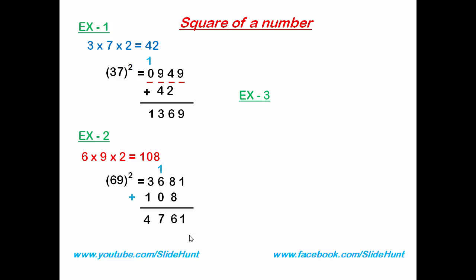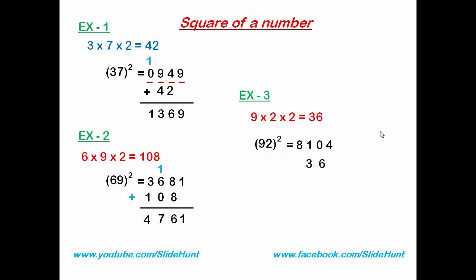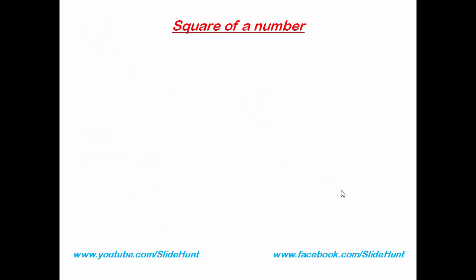Example 3: let's square 92. 9 squared is 81, and 2 squared is 4 — write 04. Multiply the two digits and double it: 9 times 2 is 18, doubled is 36. Adding 36 with the previous result gives 8464. It's very simple — hope you understand.